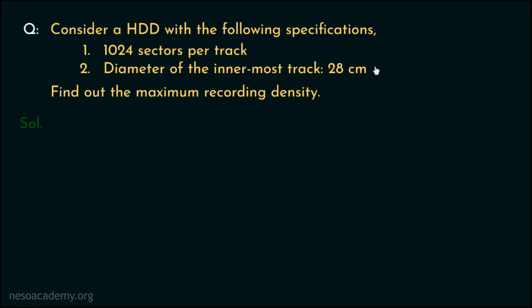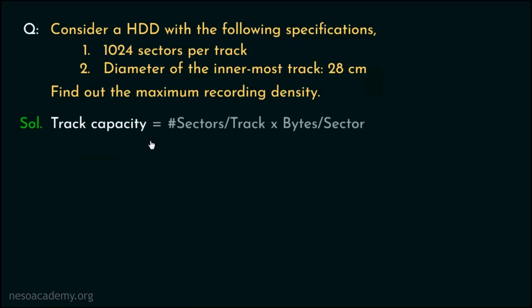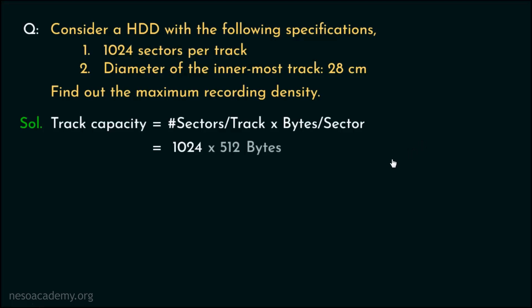The track capacity can be calculated by multiplying the number of sectors per track by the bytes per sector, that is, the sector size. The number of sectors per track is 1024. The bytes per sector — the sector size — has not been provided in the question, but we know that generally the sector size is 512 bytes.